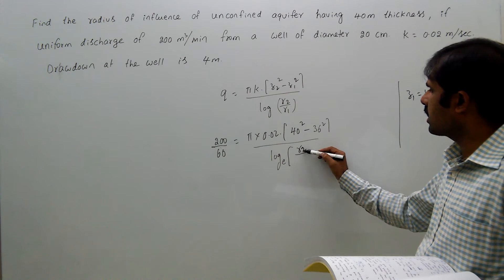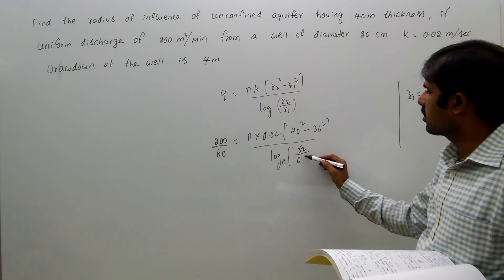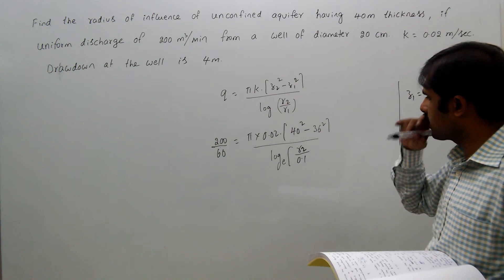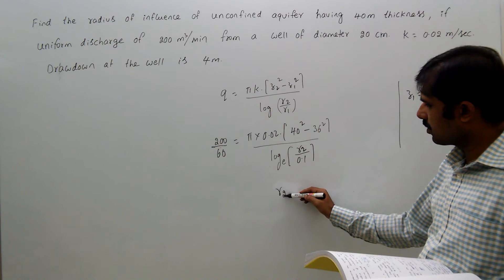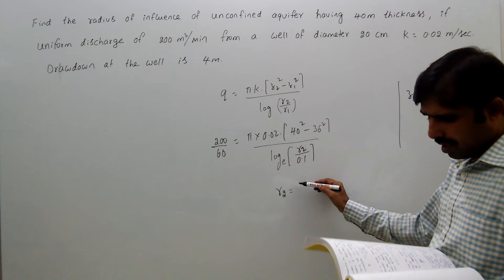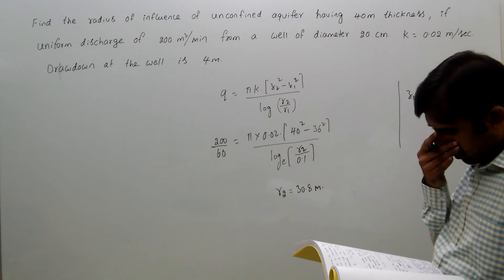r1 is the radius of the well, which is 20 centimeters diameter, meaning 0.1 meters, because 10 centimeters is the radius. Solving this, r2 equals 30.8 meters.